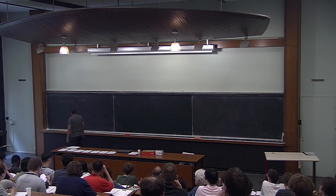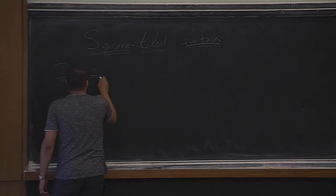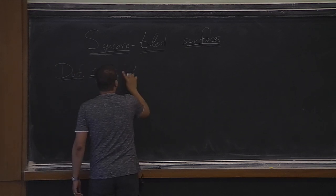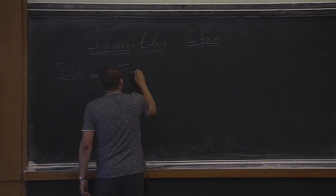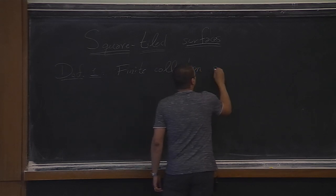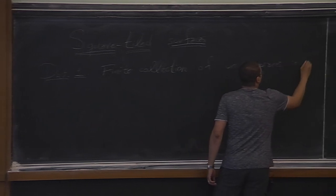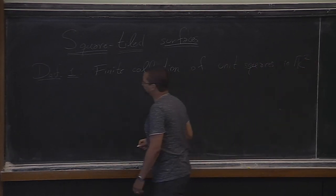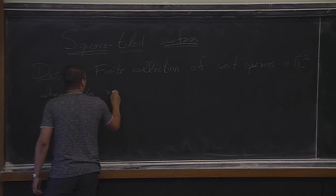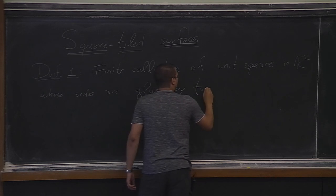Pascal already gave the definition of a square-tiled surface, but let me give many definitions. Definition one is a finite collection of unit squares in R²  whose sides are identified by translations.